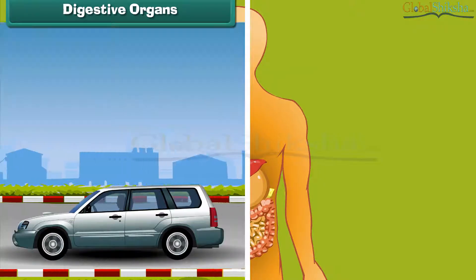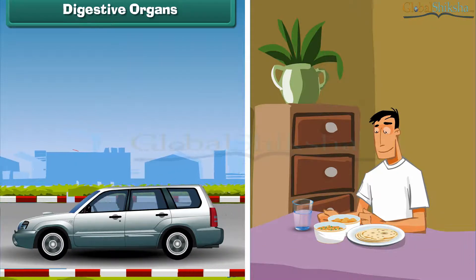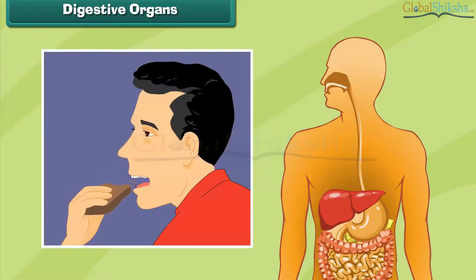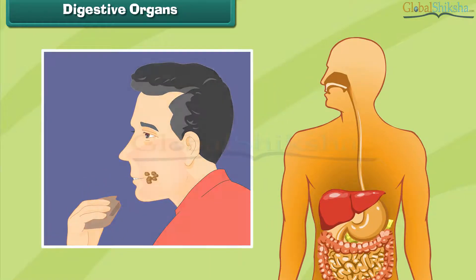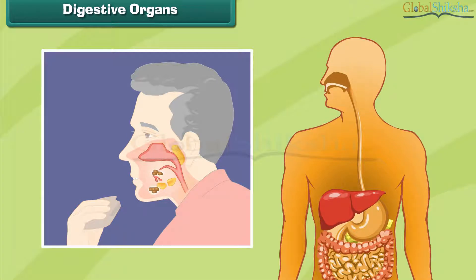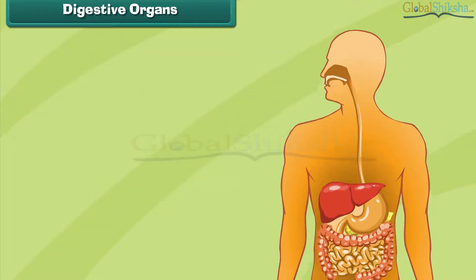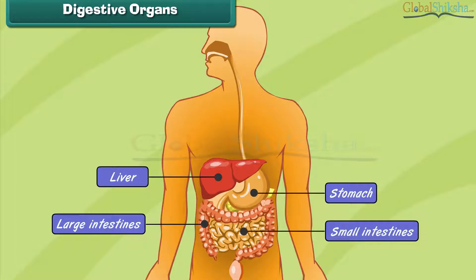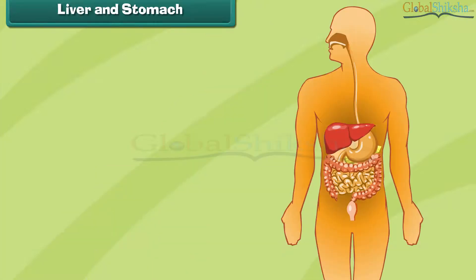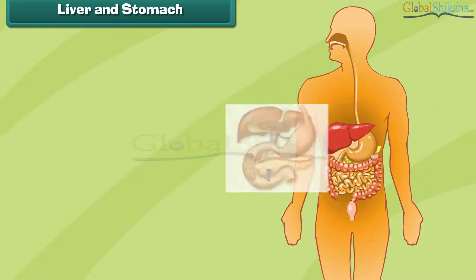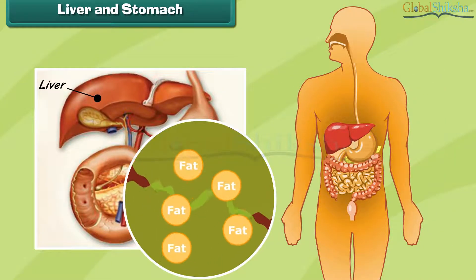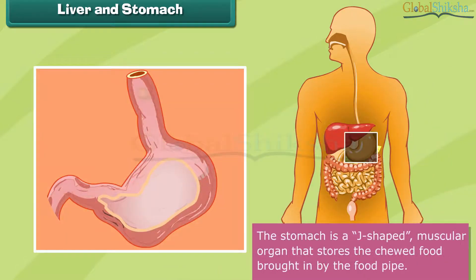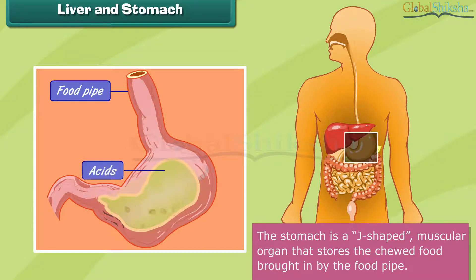Digestive organs: Like machines, the human body also requires fuel to perform work. The food that we eat every day serves as the fuel for our body. The food eaten is broken down into smaller pieces to obtain energy — this process is called digestion. The liver is a secretory organ that produces juices that help in digesting food. The stomach is a J-shaped muscular organ that stores the chewed food and digests it with the help of enzymes and acids.